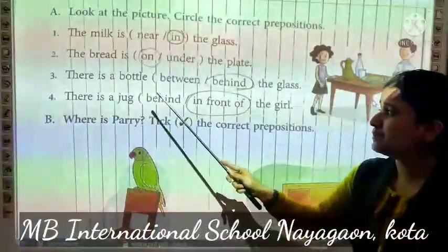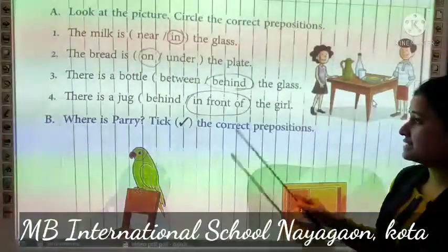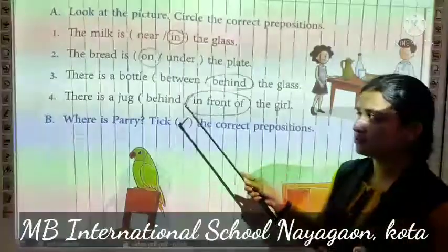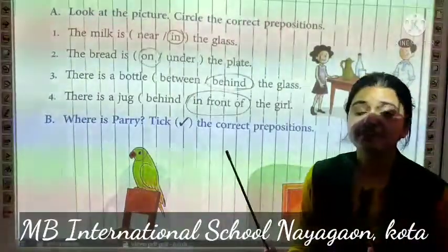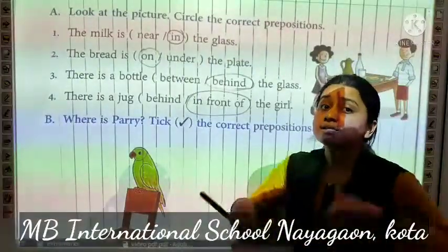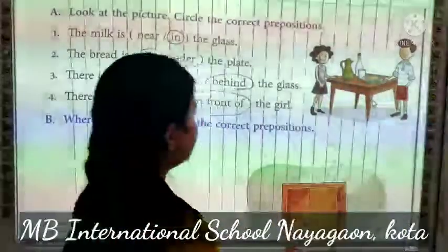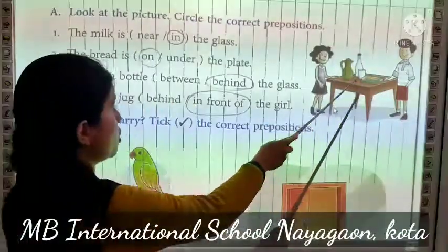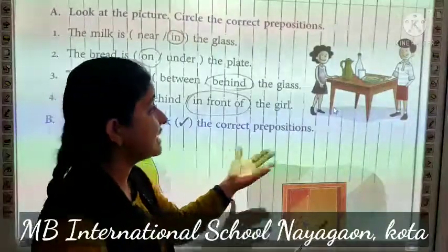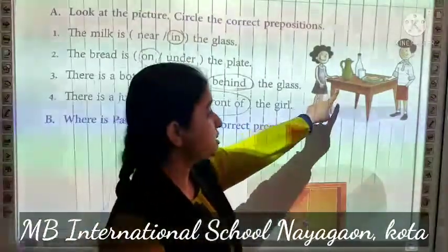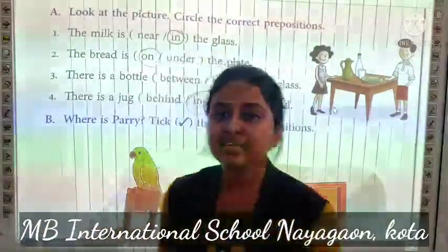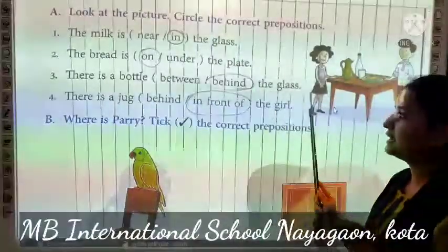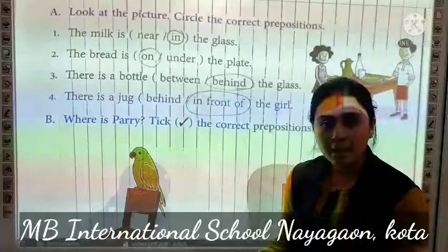Now third one is, there is a bottle dash the glass. Yaha pere bottle hai, toh uski prepositions bata niye — between ya behind. Between means beach mein, behind means piche. Is mein dikhra hai ki joh bottle hai woh glass ke piche hai. Toh piche ke liye behind use karenghe. There is a bottle behind the glass — joh bottle hai woh glass ke piche hai.